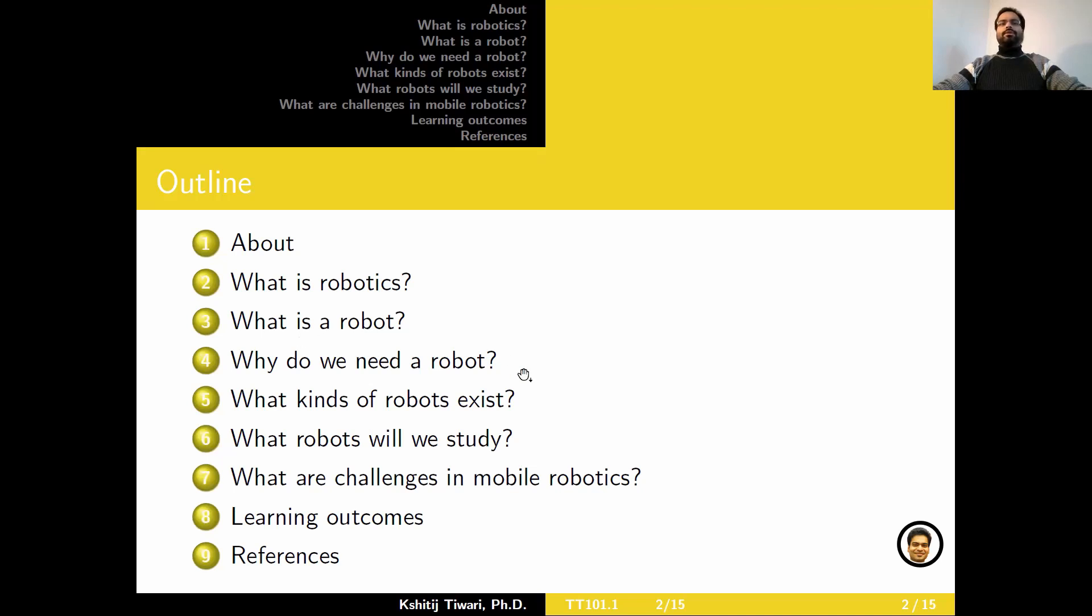What is robotics? What is a robot? Why do we need one? What kind of robots exist? What robots will we study as a part of this course? What are the challenges that we are interested in addressing? The learning outcomes and some reference material that you could refer to as a part of this course.